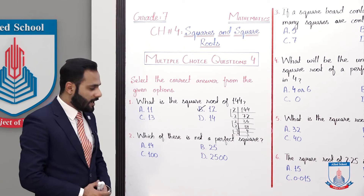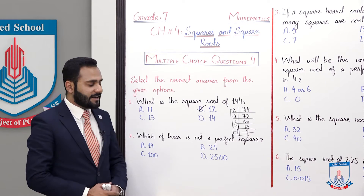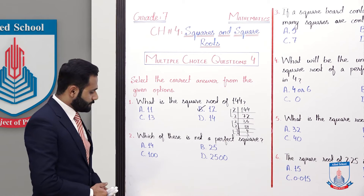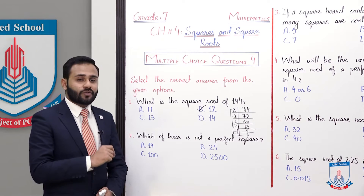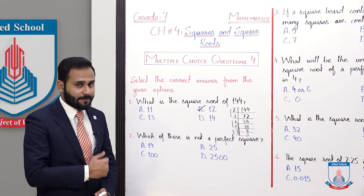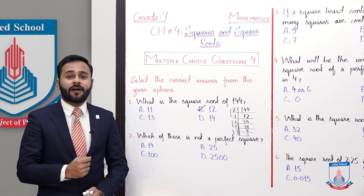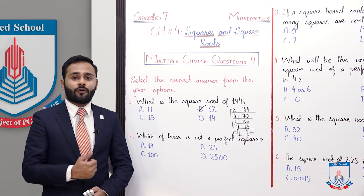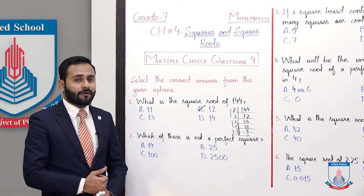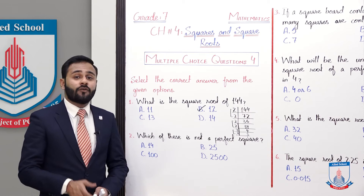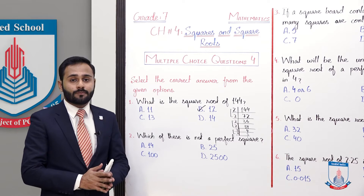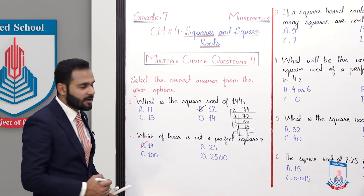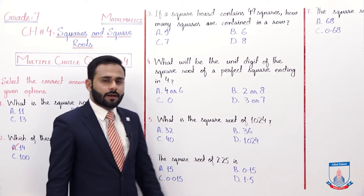The next MCQ: which of these is not a perfect square? Options are a) 14, b) 25, c) 100, and d) 2500. The square root of 25 is 5, so it is a perfect square. The square root of 100 is 10, also a perfect square. But 14's square root is not a whole number — it comes in decimal, meaning it is not a perfect square. So the answer is option a) 14.